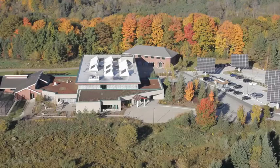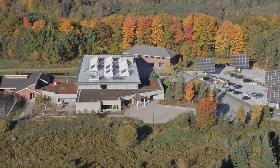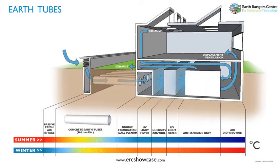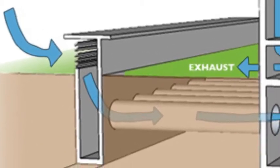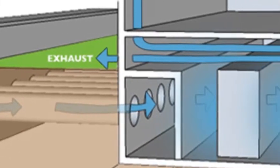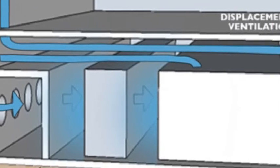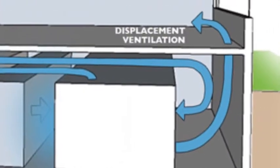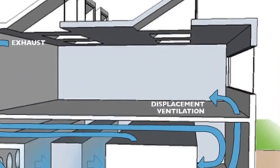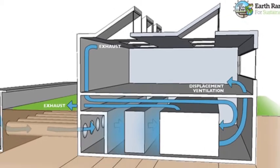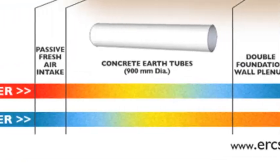In the Earth Ranger Center for Sustainable Technology, located in Woodbridge, Ontario, they make use of earth tubes. This system sucks in air from an area outside the building which travels through concrete earth tubes, either cooling it down or heating it up. It then travels through the basement.